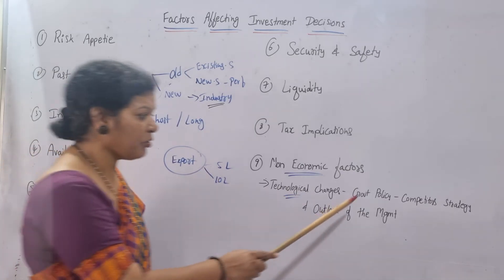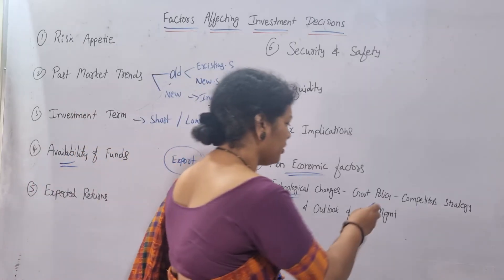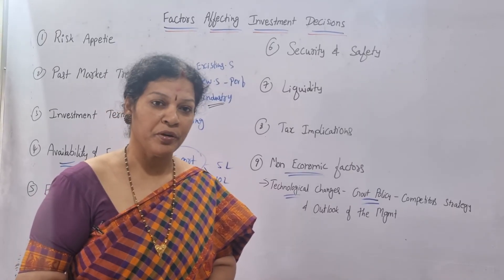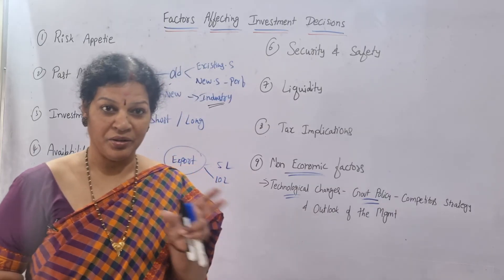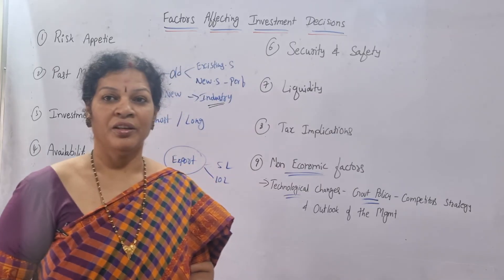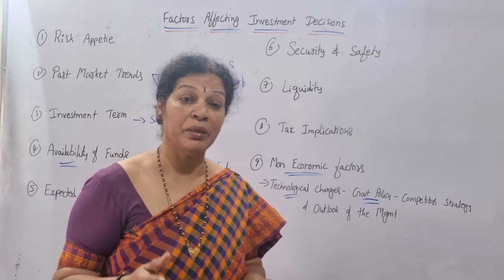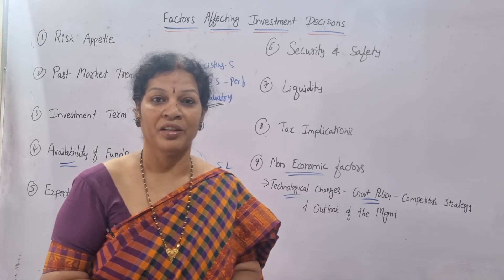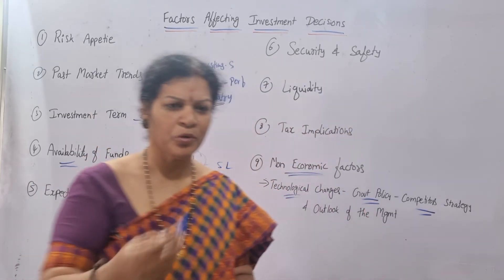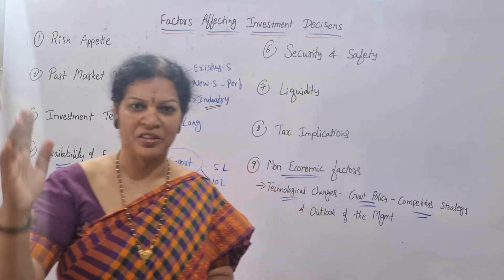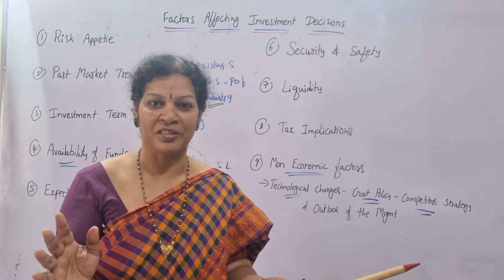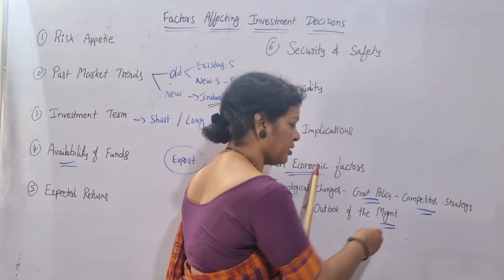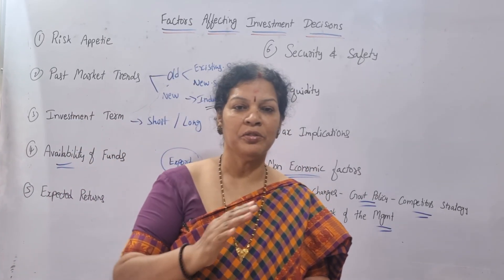Government policy changes also matter — especially during budget periods, there will be relaxation for some products and price increases for others, and you have to decide accordingly. Competitor strategy is another factor: if there are many competitors, that is a threat for the industry and the organization. But if competitors are less — a monopoly situation — there is no problem, and it is an evergreen project you can invest in.